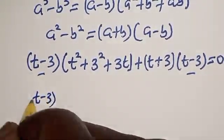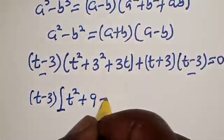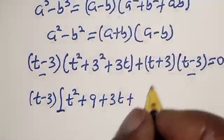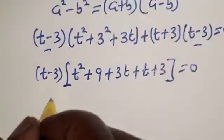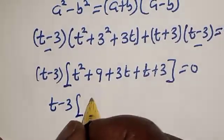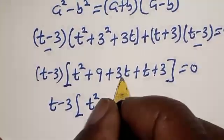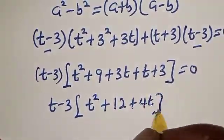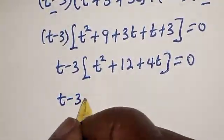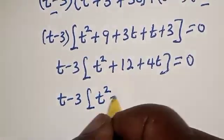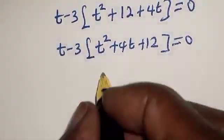t minus 3, bracket, t squared plus 9 plus 3t plus t plus 3 is equal to 0. This simplifies to t minus 3, bracket, t squared plus 9 plus 12 plus 4t is equal to 0. Rearranging: t minus 3 bracket t squared plus 4t plus 12 is equal to 0.